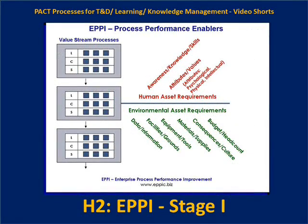We can look at what the enablers of those processes are: what human assets do we require now and what may we require in the future? Are there different knowledge and skills needed? Are we going to use forklifts to enable the process rather than relying on strong backs of individual humans? Do we need to change our facilities and build clean rooms because the current environment is too dusty and dirty as we move into new products in the future state?